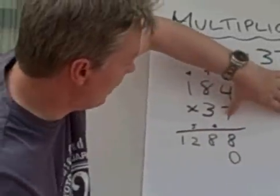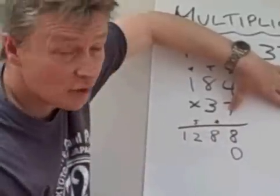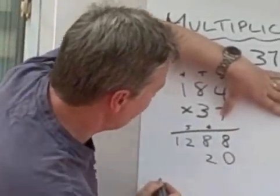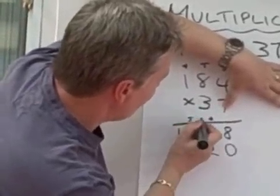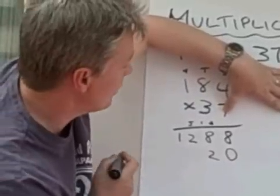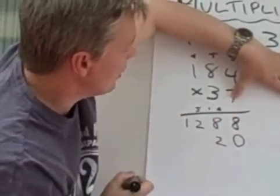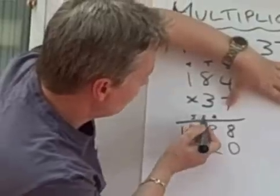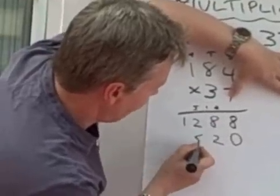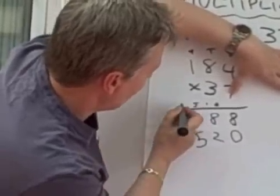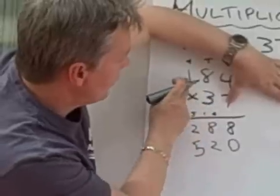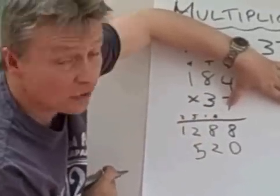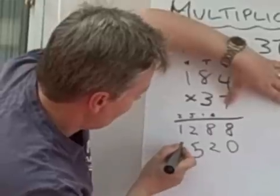So, once again, three times four is 12. Write down the two, and I'm also going to write down the one just to remind myself. Three times eight is 24, plus the one is 25, and I'm going to write down the two. Three times one is three, plus the two is five.